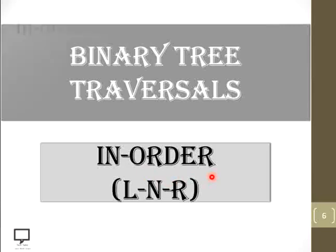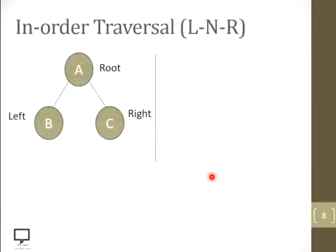First of all, I would like to explain all these things with the help of a simple example. Here a root node is there, along with its left child and its right child. How to traverse this tree in in-order is what I am going to explain in this slide.